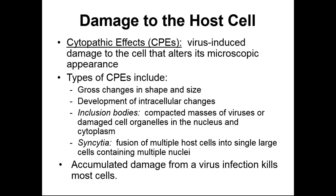Fused infected cells form a syncytia — very large cells with multiple nuclei. Some multi-nucleate cells in animals are normal, like skeletal muscle fibers, but that's the exception. Generally, within animals we have mononucleate or single-nucleated cells. As more and more individual cells are damaged by viruses, that damage accumulates in the tissue and will eventually kill the organism if left unchecked.